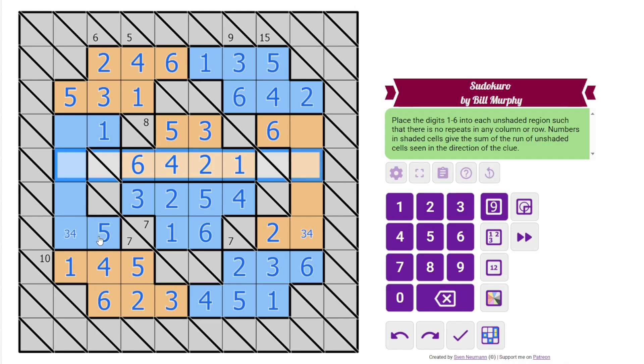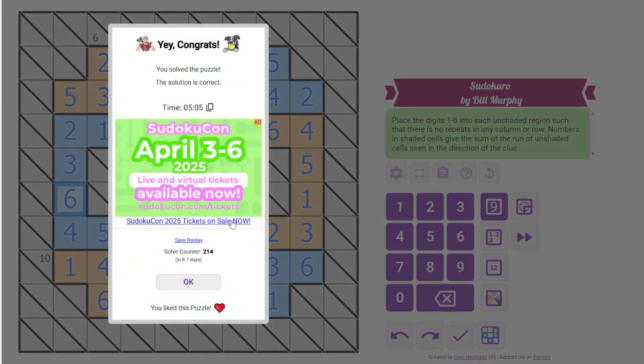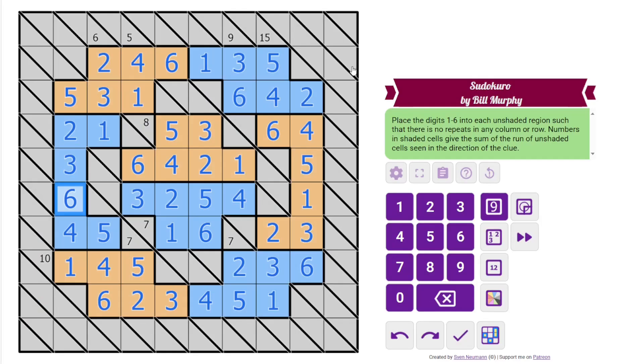Now we still need a 5 in this row. There's a 5 in the blue region. That's going to resolve the 3, 4 pair. And then we need 2 and 4, 1 and 6 to finish it off. That's the solution.